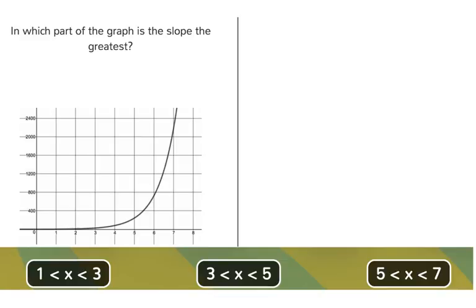Alright, in which part of the graph is the slope the greatest? Between 1 and 3? Between 3 and 5? Or between 5 and 7?